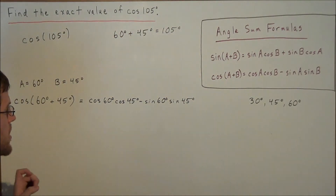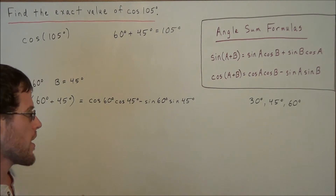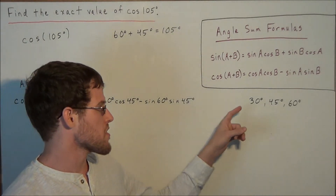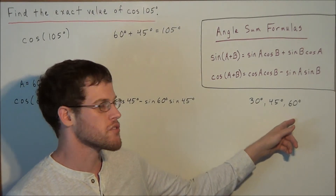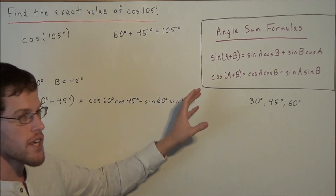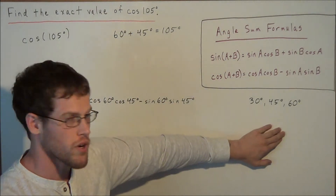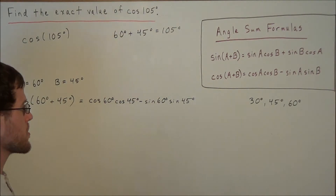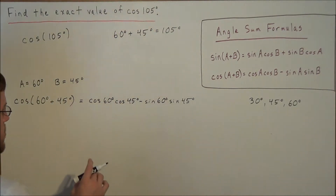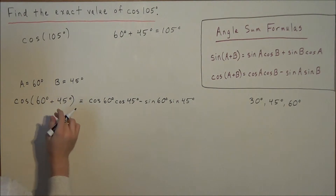So now for the next line of the problem, this is where knowing the exact values of sine and cosine at 30 degrees, 45 degrees, and 60 degrees is going to come in. If you haven't learned how to do that yet, you would want to watch this video right here. Otherwise, I'm just going to move forward and assume that we know the sine and cosine at these exact angles.